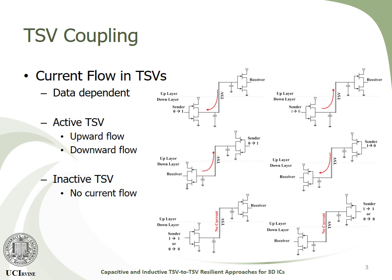The TSV-to-TSV coupling is a data-dependent effect. In other words, the current flow of each TSV is determined by considering the consecutive data bits that are supposed to be transferred through each TSV. We define each TSV as either active or inactive.